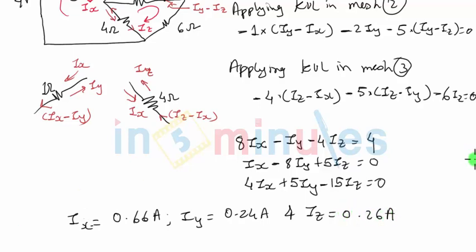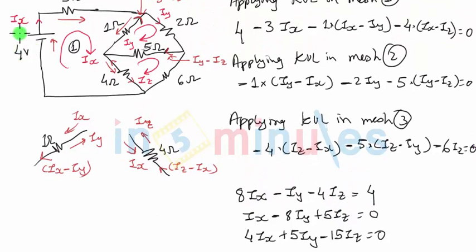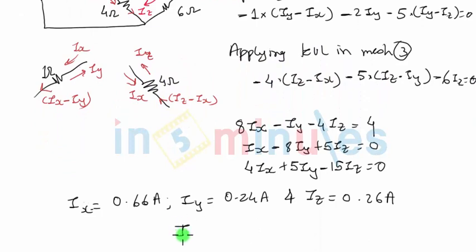But out of these three, we were looking for current supplied by the 4 volt battery, which was nothing but IX. So my final answer, which is the current supplied by the 4 volt battery, is IX equals 0.66 amperes. That's my final answer.